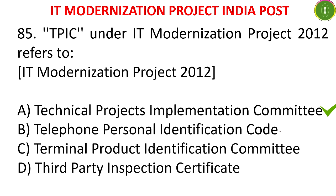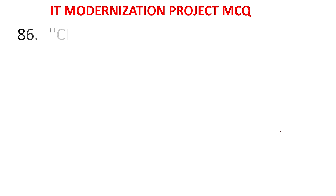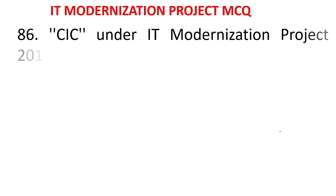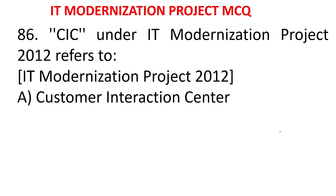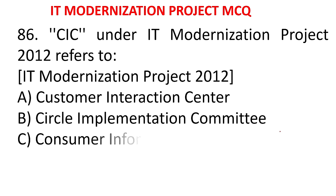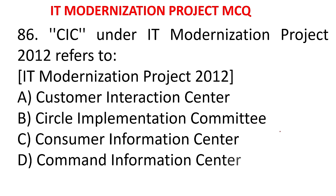MCQ 82: CIC under IT modernization project refers to - A) Customer Interaction Center, B) Circle Implementation Committee, C) Consumer Information Center, D) Command Information Center. The answer is Circle Implementation Committee.